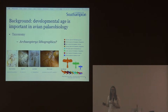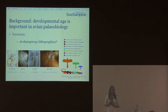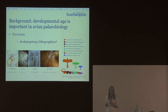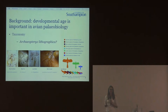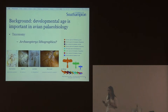Whereas other people have said that that just represents a growth series within the single species Archaeopteryx lithographica. At the moment, we don't really have a very clear way of confirming that either way, because we don't have a good way of assessing ontogenetic age in fossil birds — we don't have a good way of assessing them in modern birds, let alone in fossils.